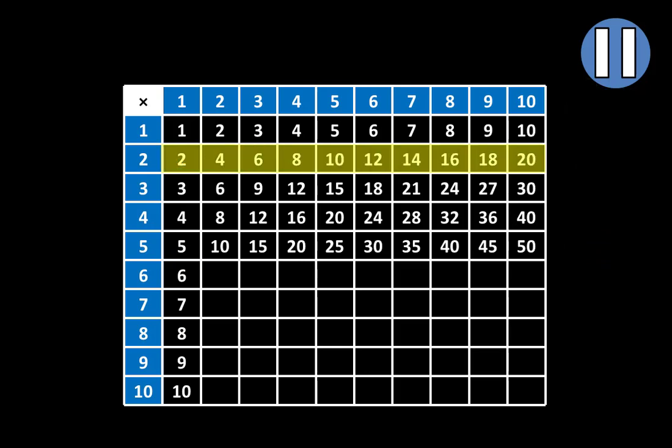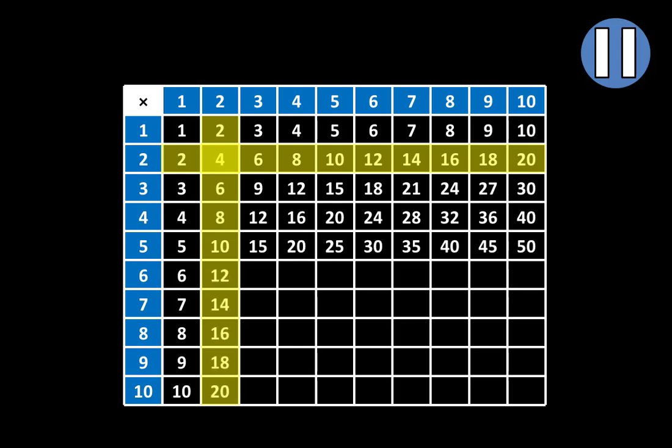In this row, we can see all of the multiples of 2 from 2 to 20: 2, 4, 6, 8, 10, 12, 14, 16, 18, 20. So in this column, we'll see all of the multiples of 2 from 2 to 20. We see 2, 4, 6, 8, 10. Let's fill in 12, 14, 16, 18, and 20.